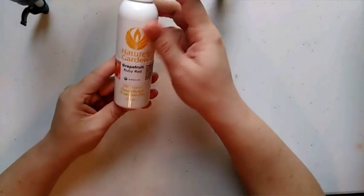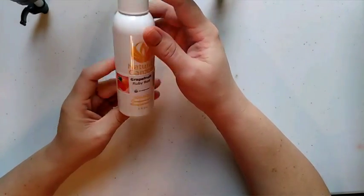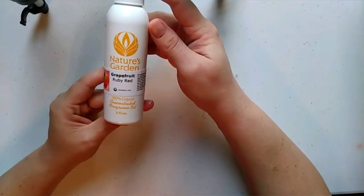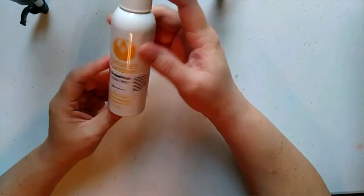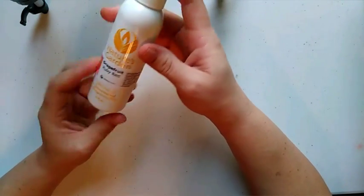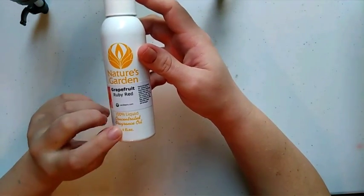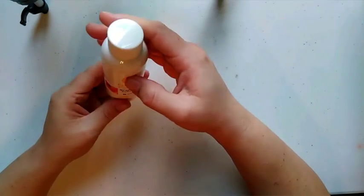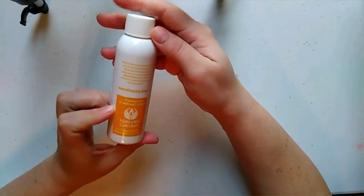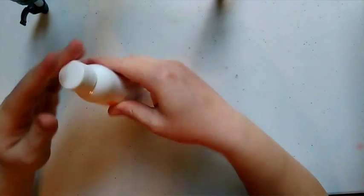And then the other thing I got was from Nature's Garden. And this is ruby red grapefruit. And, oh my gosh. I mean, first of all, look at the size of this. They gave us four ounces. I mean, that's enough to do a lot with. So, I was very impressed with the size of the sample that they gave us.